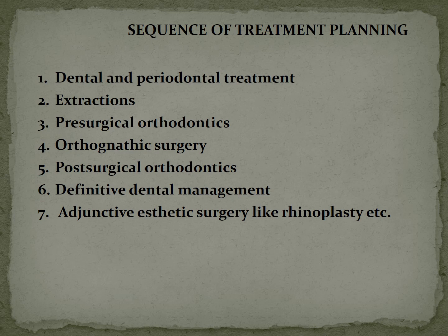The treatment sequence begins with dental and periodontal treatment — scaling, oral prophylaxis, restoration of caries, and extraction of grossly decayed teeth. Pre-surgical orthodontics may be required, especially when the patient has dental compensation, correcting lingually inclined or labially proclined teeth. This is followed by the orthognathic surgery itself, then post-surgical orthodontics in certain cases, definitive dental management, and possibly adjunctive aesthetic surgery like rhinoplasty.